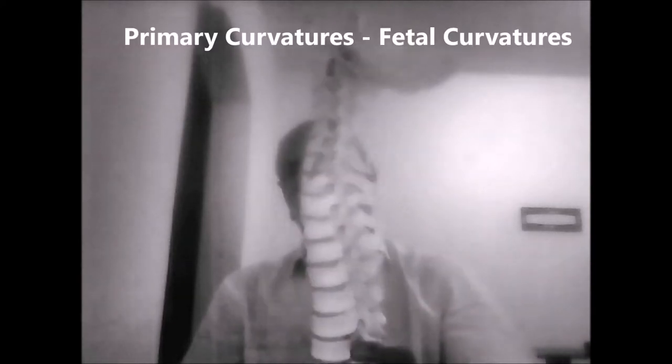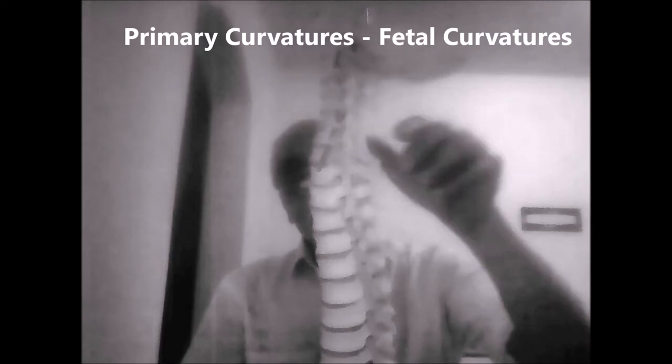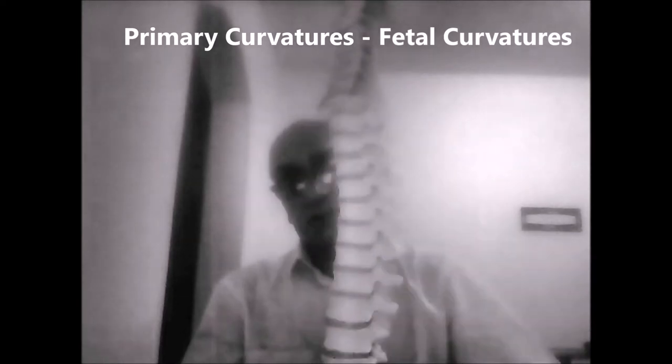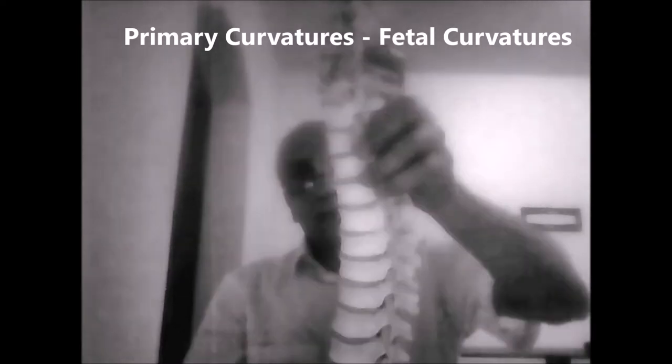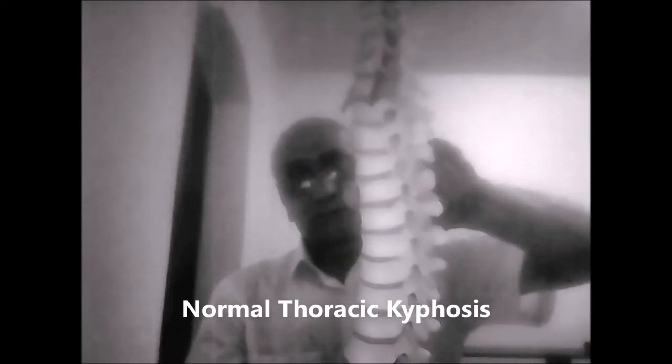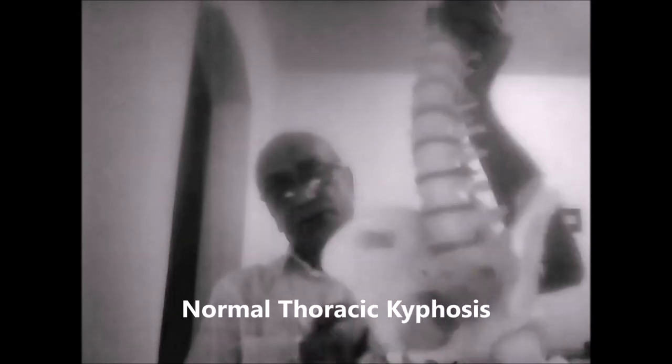The primary curvatures are those which mimic the fetal curvature when the fetus was inside the mother's womb. So therefore the primary curvature is the thoracic — it's a normal thoracic kyphosis — and the second primary curvature is the sacrum, which is already curved forward. So these two maintain the fetal curvature.